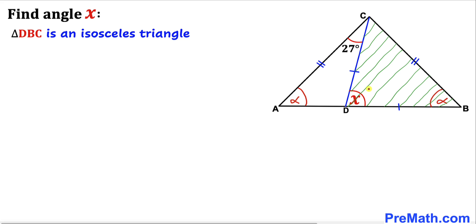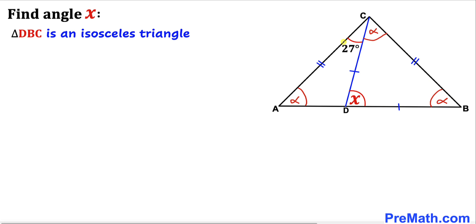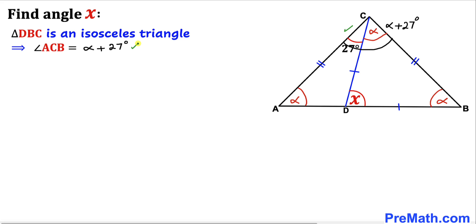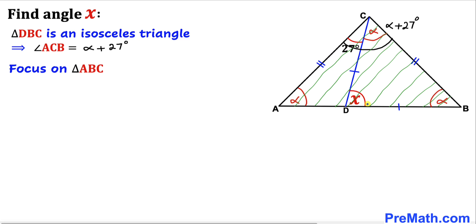Here's our next step. Let's focus on triangle BDC. We know this triangle is isosceles as well since side length BD equals side length CD. Therefore its base angles must be equal — if one angle is alpha, the other is alpha as well. Therefore angle ACB must equal alpha plus 27 degrees.